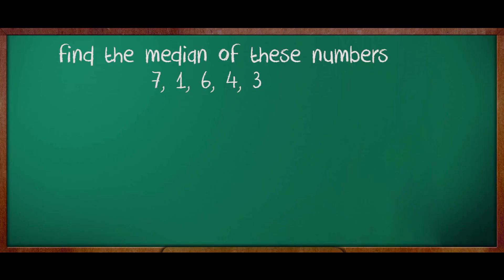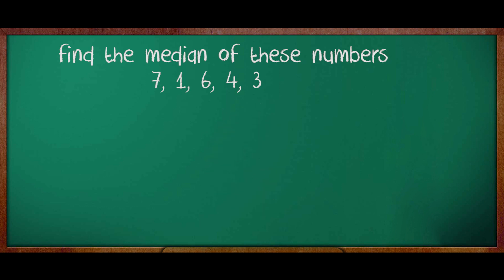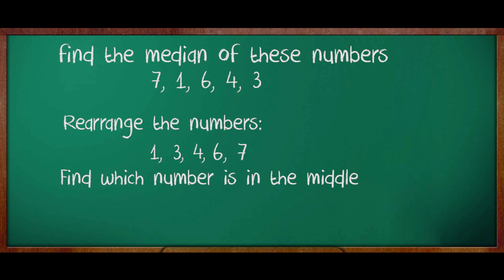Children, try finding out the median of these numbers. The numbers are 7, 1, 6, 4, 3. Did you complete your work? Let us see. Can you see the numbers have been rearranged in ascending order? Like 1, 3, 4, 6, and 7. Now, can you find the number in the middle? What is that number? 4. Correct. So, 4 is the median of the set of data given.